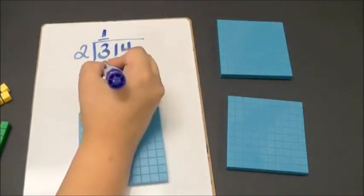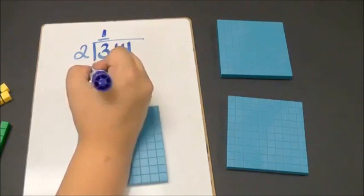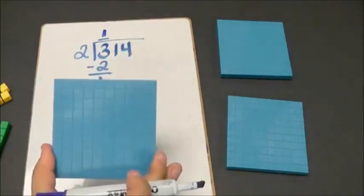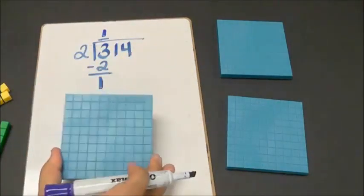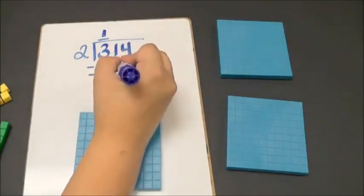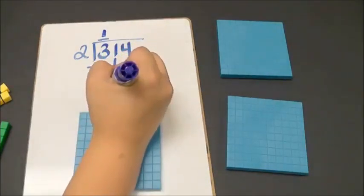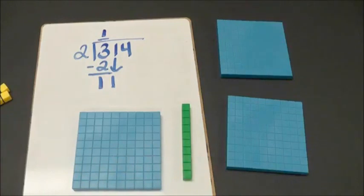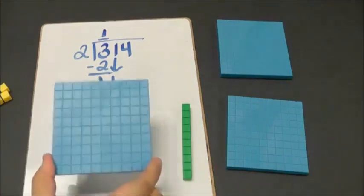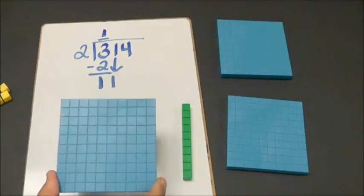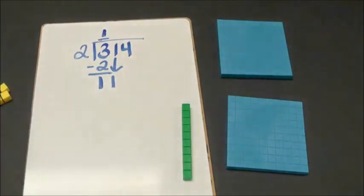1 times 2 is 2, that's 1. I have 100 left over. I bring down my 10 — that is 1 ten. I am going to trade my 100 for 10 tens.